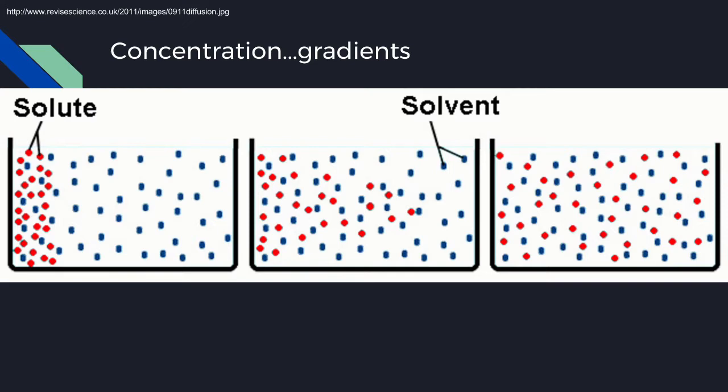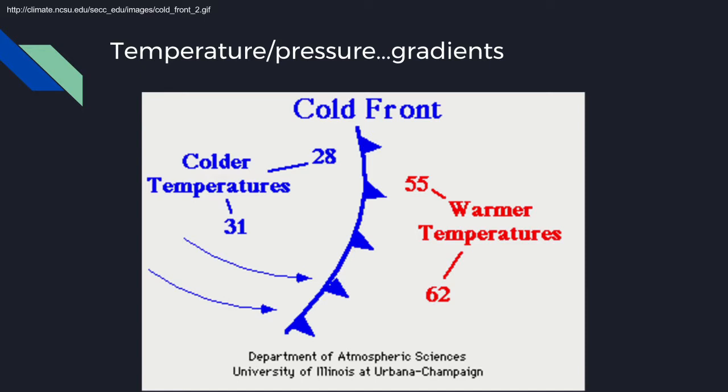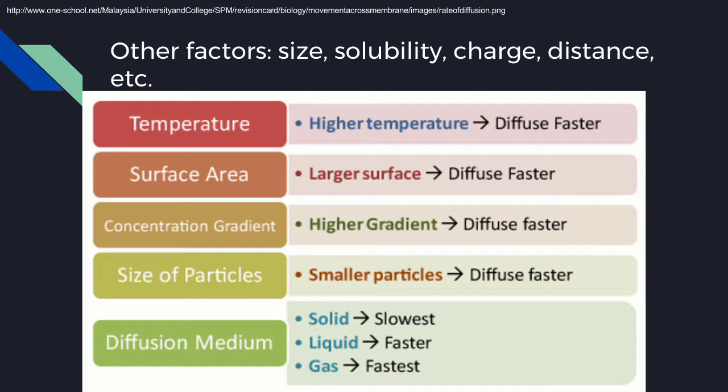But there's other things. We've been hearing about hurricanes and stuff like that - well that's due to temperatures and pressures. Differences in temperatures and differences in pressures make wind happen or make it so that it feels hot or it feels cold. And there could be other things that end up affecting diffusion, like how big something is or whether it can be soluble and stuff like that.